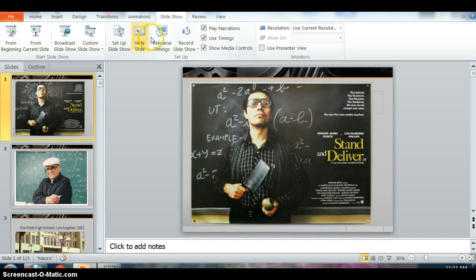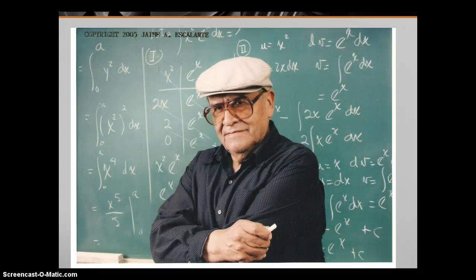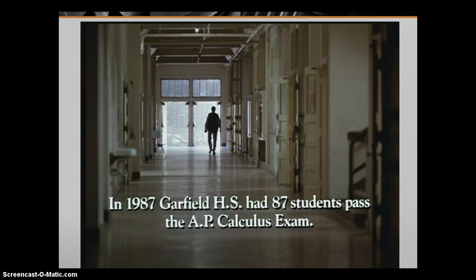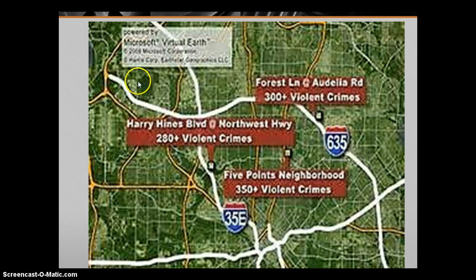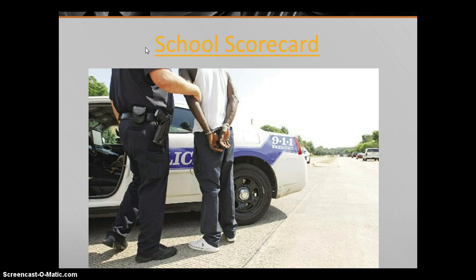I picked Stand and Deliver because my school is Conrad High School, which is about 50-60% Hispanic and low performing. Stand and Deliver is based on the story of Jaime Escalante, and it takes place at Garfield High School in Los Angeles in 1982. He decides to lead a group of students to take the AP Calculus exam. I personally teach in the Five Point neighborhood at Conrad High School, which is notorious for its violent crime, and the school scorecard shows not too many people are passing the test — 1.4% are considered college ready.